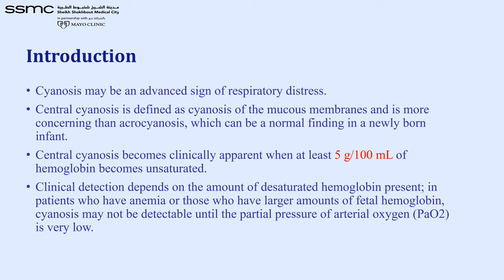Cyanosis is also an evident or advanced sign of respiratory distress. We must differentiate central cyanosis, which is cyanosis of the mucous membranes and is more concerning, from acrocyanosis, which can be a normal finding in newly born infants. Central cyanosis becomes clinically apparent when at least 5 grams per 100 ml of hemoglobin becomes unsaturated, as cyanosis appears when unsaturated hemoglobin increases relative to saturated hemoglobin.